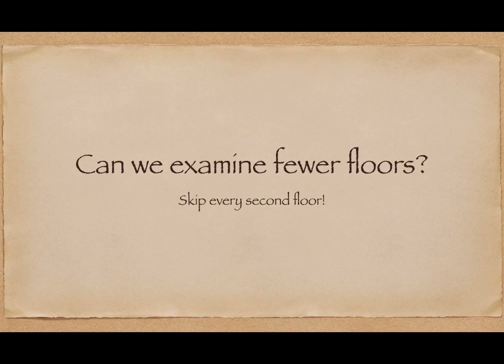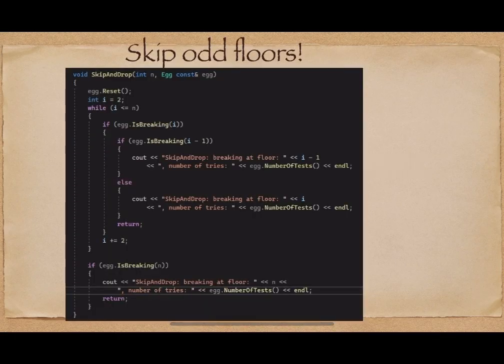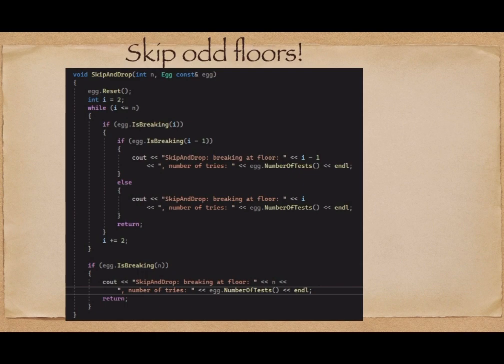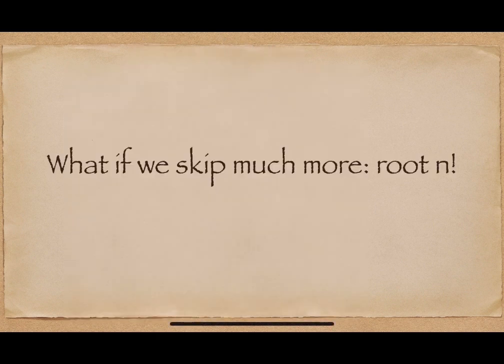Can we do that faster? Yes — we can skip every second floor. Here is an example implementation: instead of increasing the floor number by one, we increase it by two. If it breaks at some point, we examine the floor before. In the code you can see: if the egg is breaking at floor i, then also examine floor i minus one.